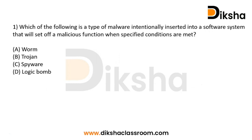The first question: which of the following is a type of malware intentionally inserted into a software system that will set off a malicious function when specified conditions are met? The options are: option A - worm, option B - Trojan, option C - spyware, and option D - logic bomb. Read the question and try to answer it.